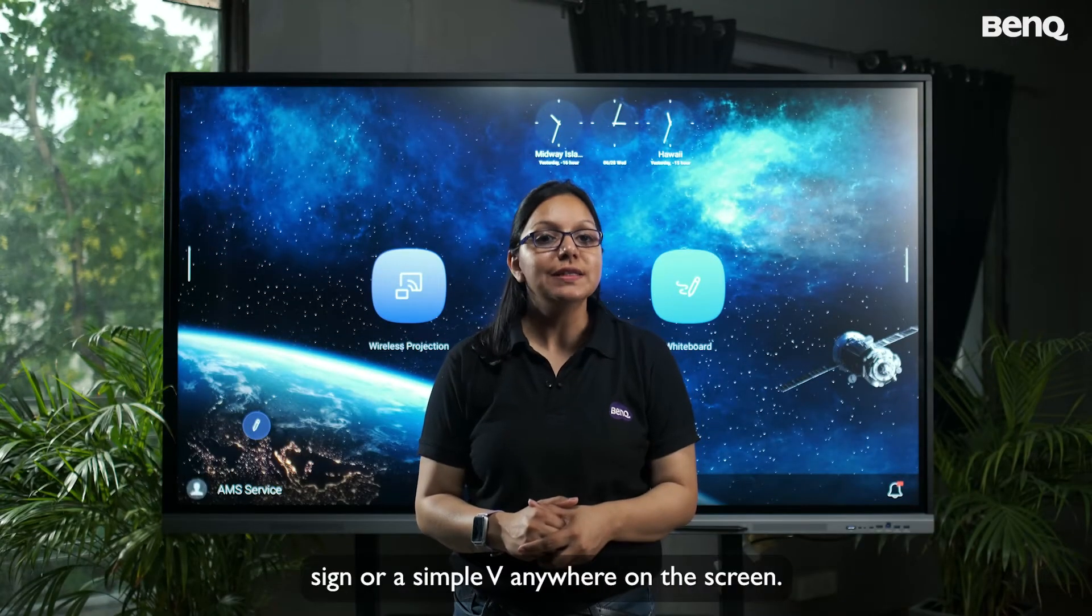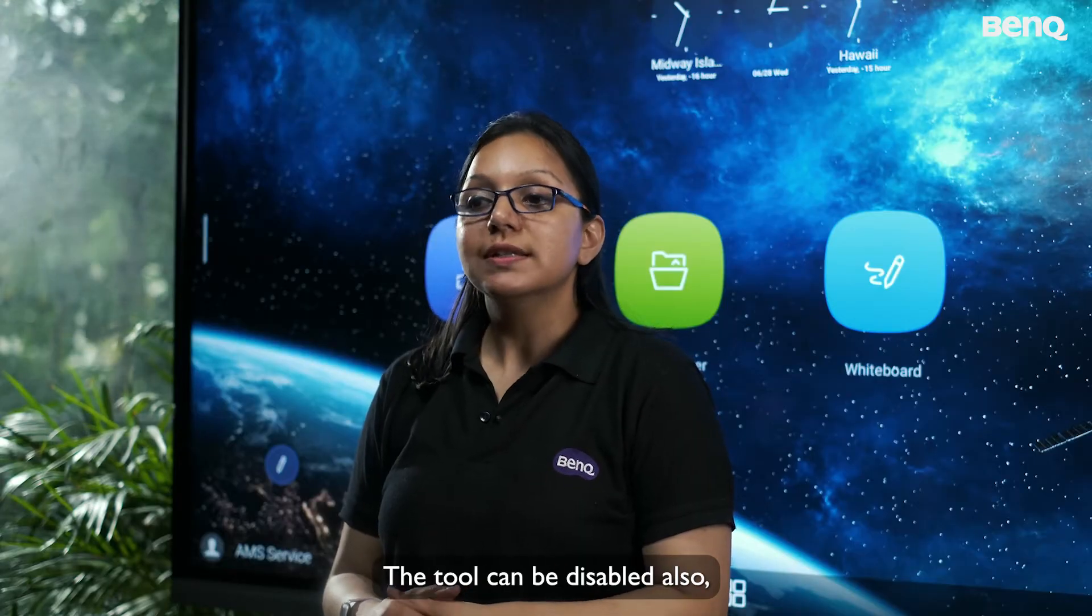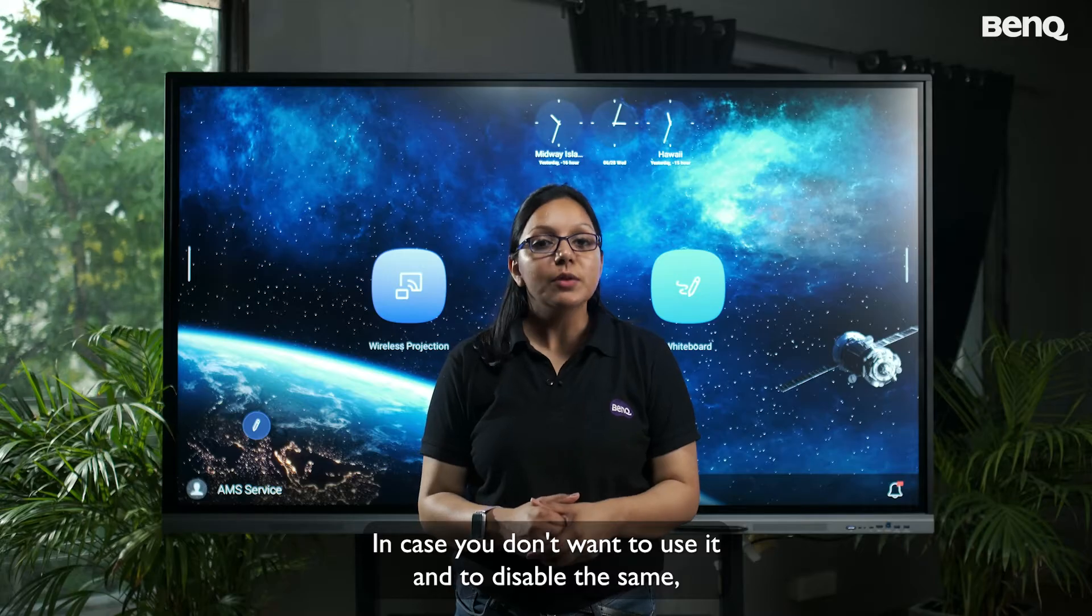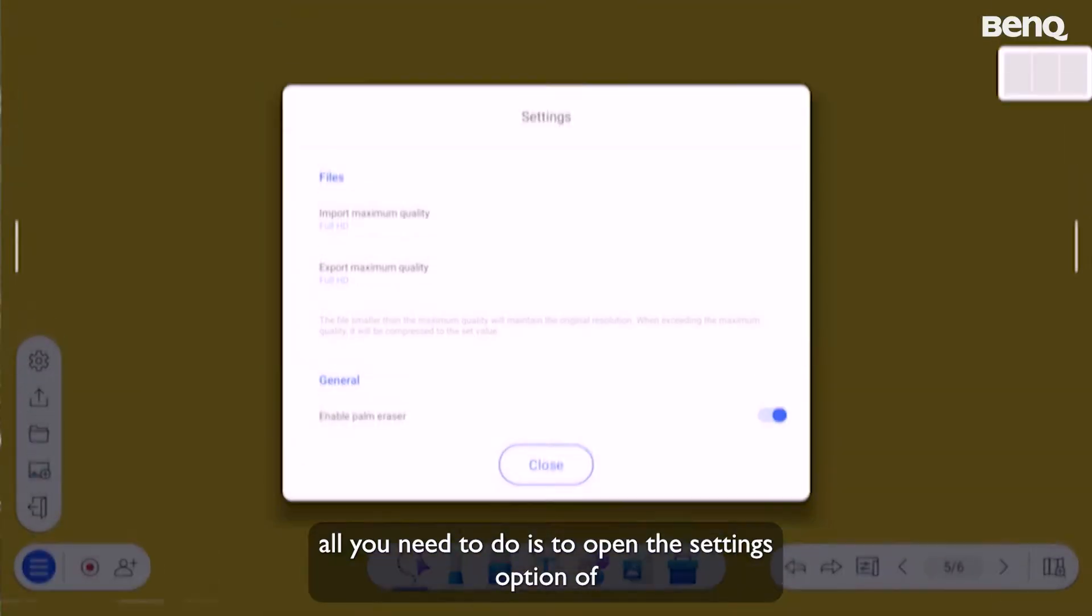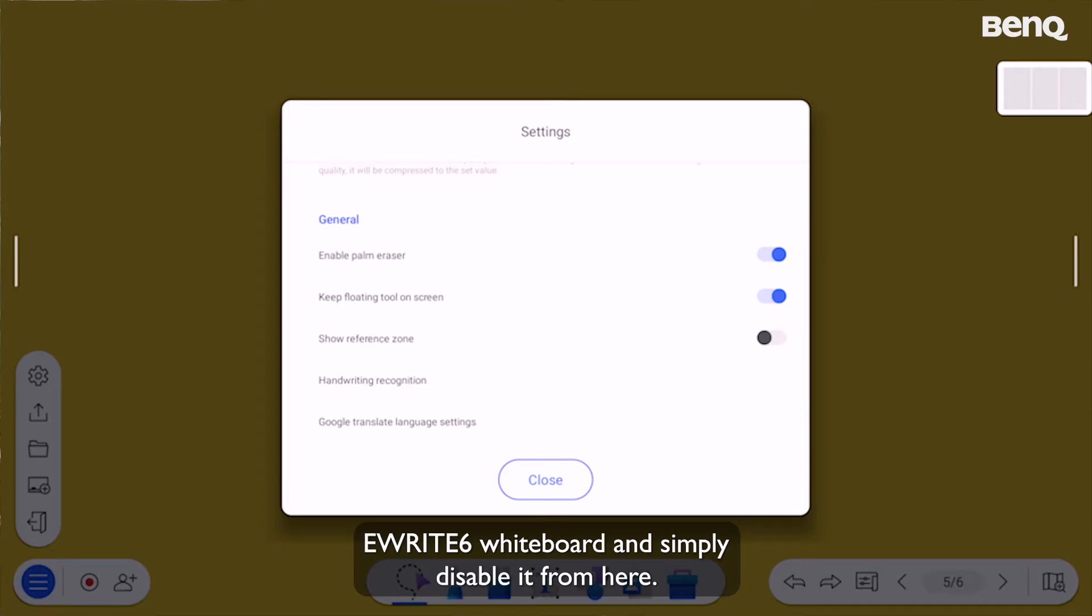Just by making a victory sign or a simple V anywhere on the screen. The tool can be disabled also in case you don't want to use it. And to disable the same, all you need to do is to open the settings option of EZWrite 6 whiteboard and simply disable it from here.